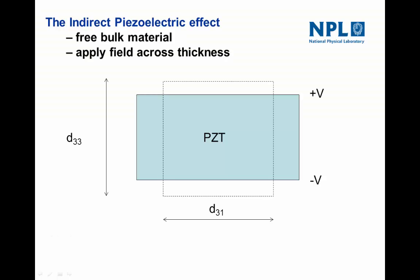If we start by looking at what happens to a piezoelectric material when you apply a voltage to it — in this case we've got a piece of PZT floating in space with a voltage applied on top and bottom — you can see it changes shape, shown by the dotted lines. It expands in one direction which we call the D33, and it contracts in another direction which we call the D31, and these are the piezoelectric coefficients which define how active that piezoelectric material is. That's essentially what we want to measure for thin films.